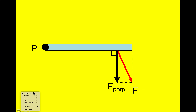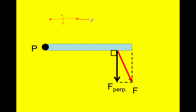Consider someone going up to a door and pushing inward along the length of the door parallel to it — the door does nothing because there is no perpendicular force acting on it. To cause the door to swing, you need a force perpendicular to the door. Pushing or pulling along the length of the door parallel to it produces no torque and nothing will happen.